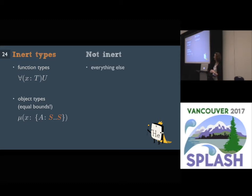What if we could show somehow that there is some condition under which the crazy rule implies the well-behaved rule? One contribution of our paper is that it does this with inert types. The condition is that every type in our typing context needs to be inert. A type is inert if it's either a function type or a recursive type of an object with equal bounds. Everything else is not inert — for example, a recursive type with different bounds is not an inert type.